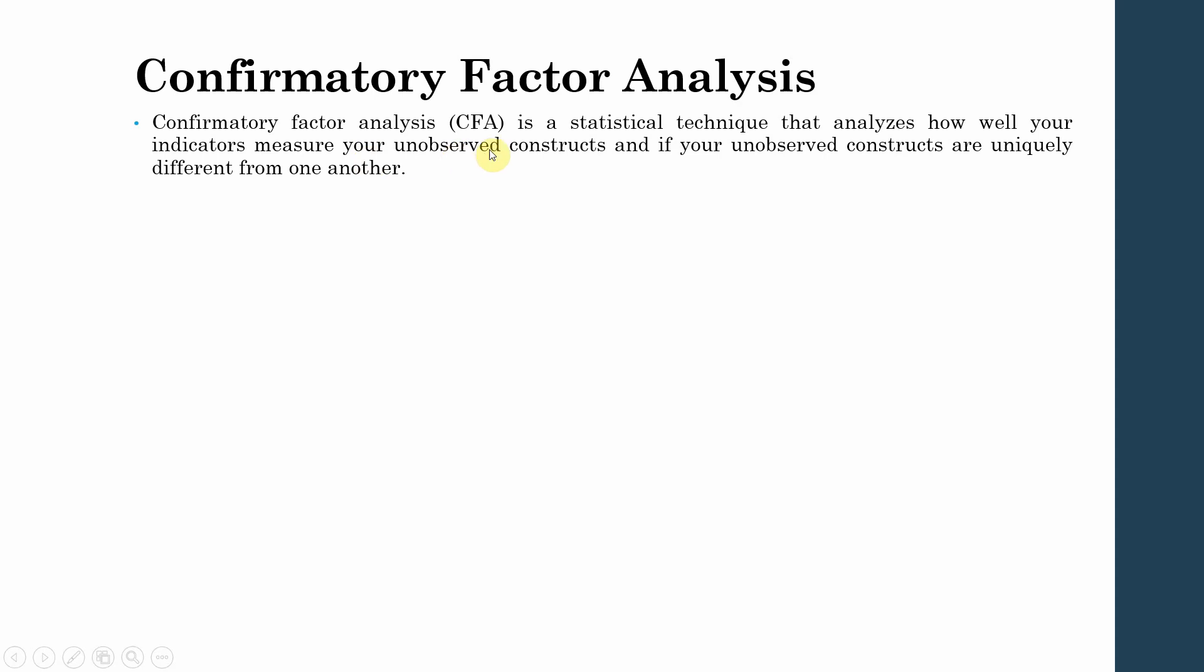And if your unobserved constructs are uniquely different from one another. Your unobserved construct is, let's say, job satisfaction that is observed or measured through 5 or 6 items.